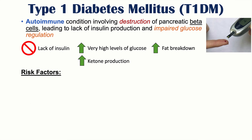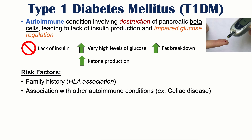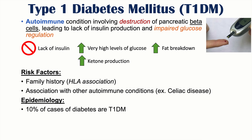What are some of the risk factors for type 1 diabetes? Family history is a big one. There is an association between certain HLA types and type 1 diabetes and other autoimmune conditions, one of which is celiac disease. Individuals with type 1 diabetes are more likely to have celiac disease. In terms of epidemiology, out of all cases of diabetes, 10% are type 1 diabetes, while type 2 represents approximately 90% of cases.